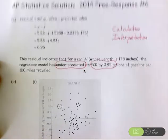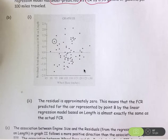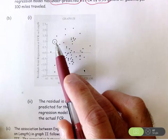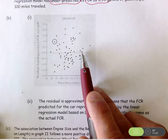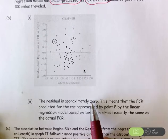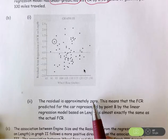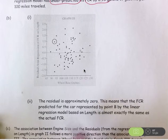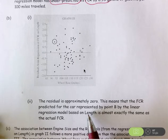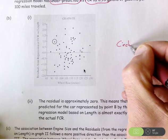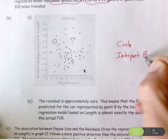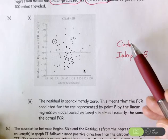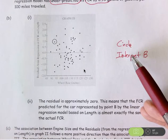For part B, an essentially correct answer again has two components. You have to circle the right value in the graph, and then you have to explain what point B near zero means — what that residual of approximately zero means in context. You have to explain why the residual is zero: what that means in terms of the actual and predicted FCR based on length. So you have to circle and then interpret. If you do both, it's an essentially correct answer. If you complete only one of the two, it is a partially correct answer. Otherwise, the answer is incorrect.